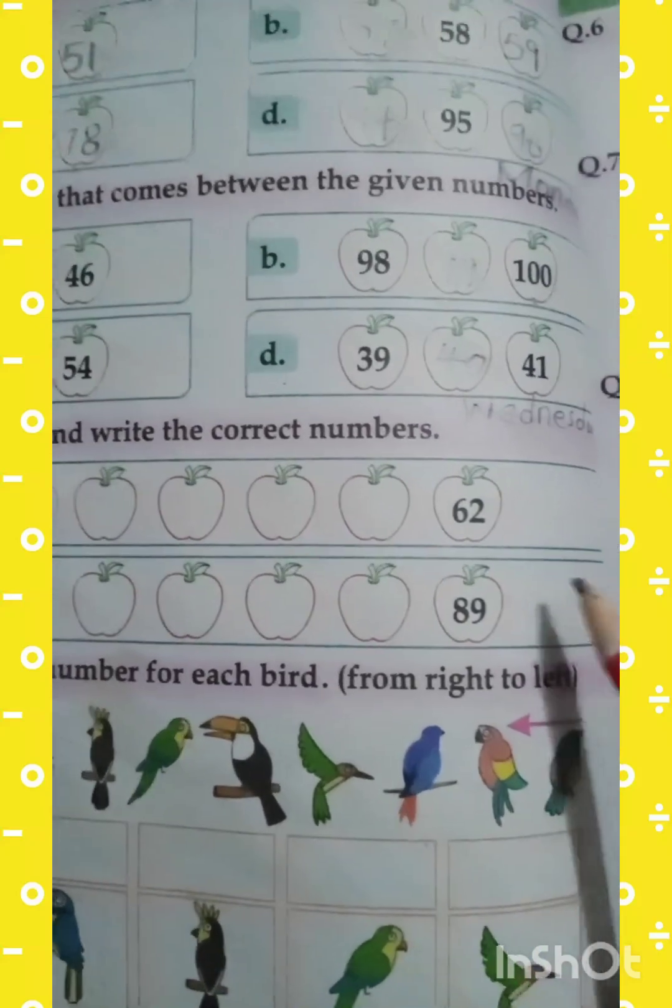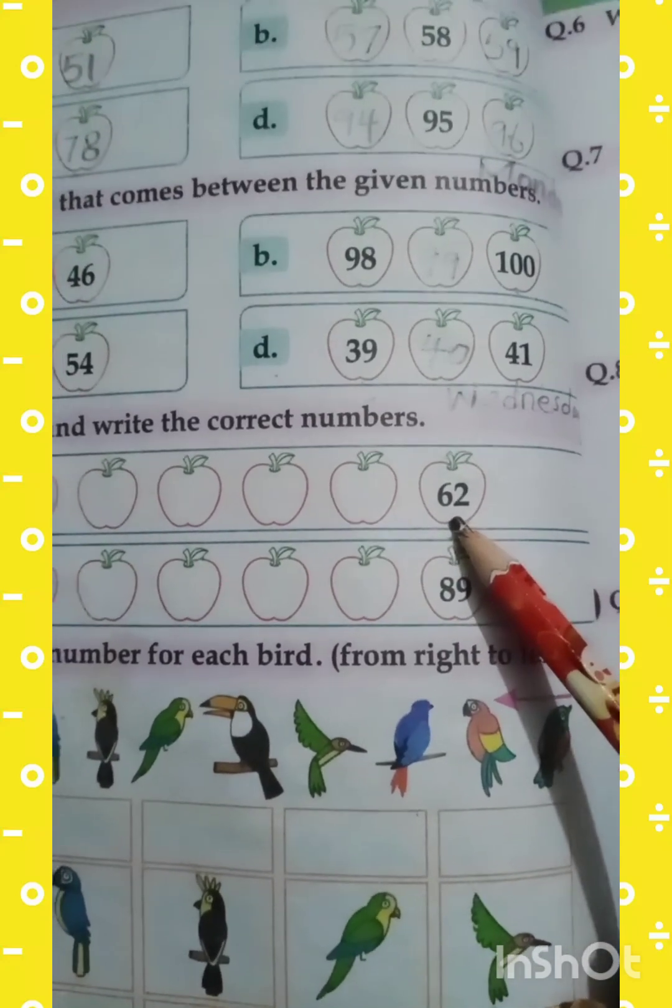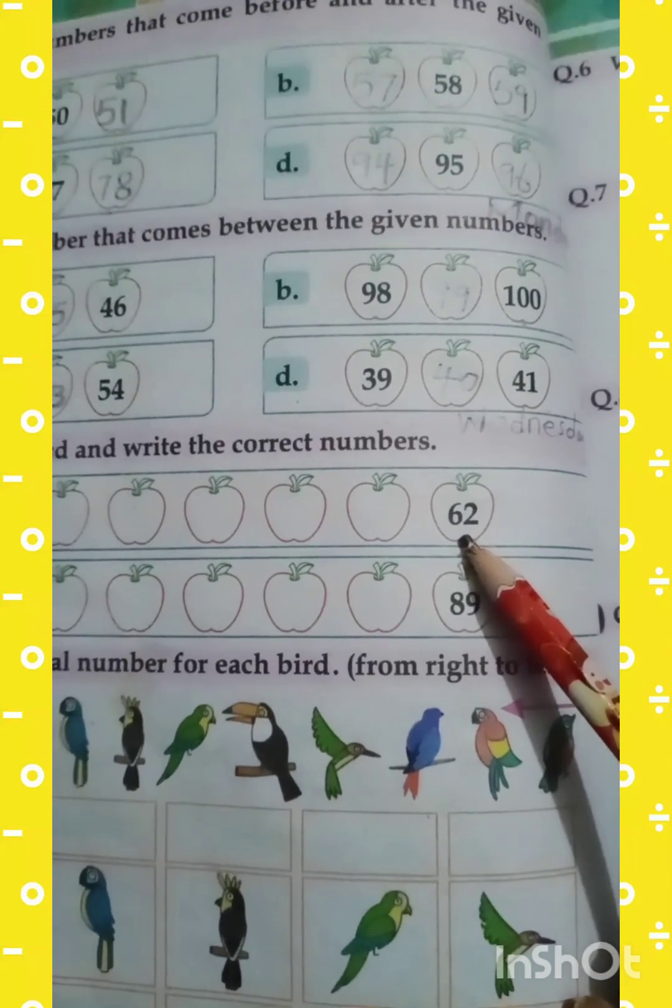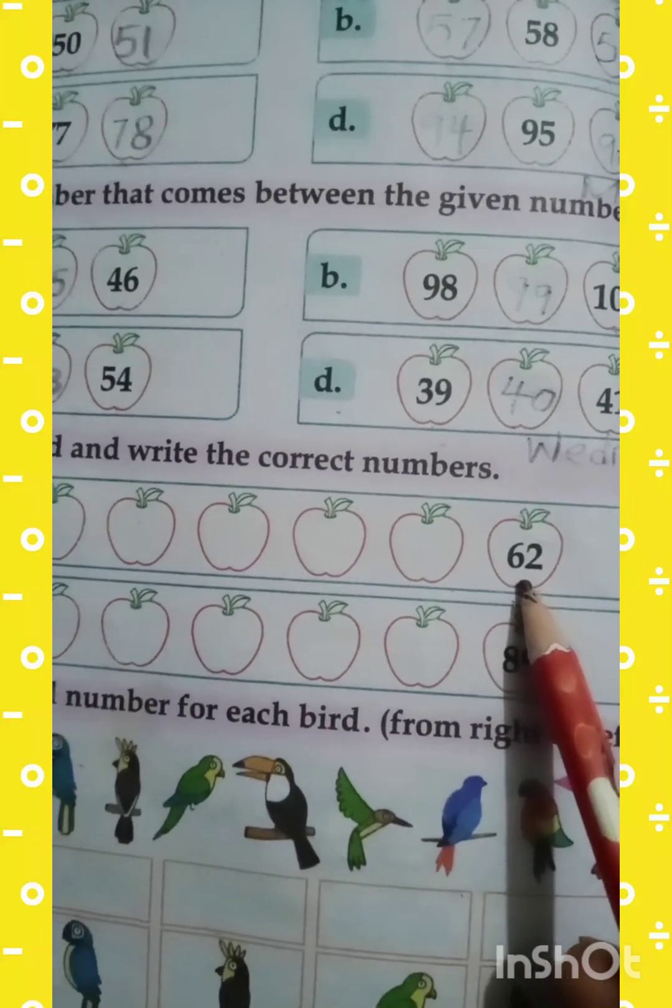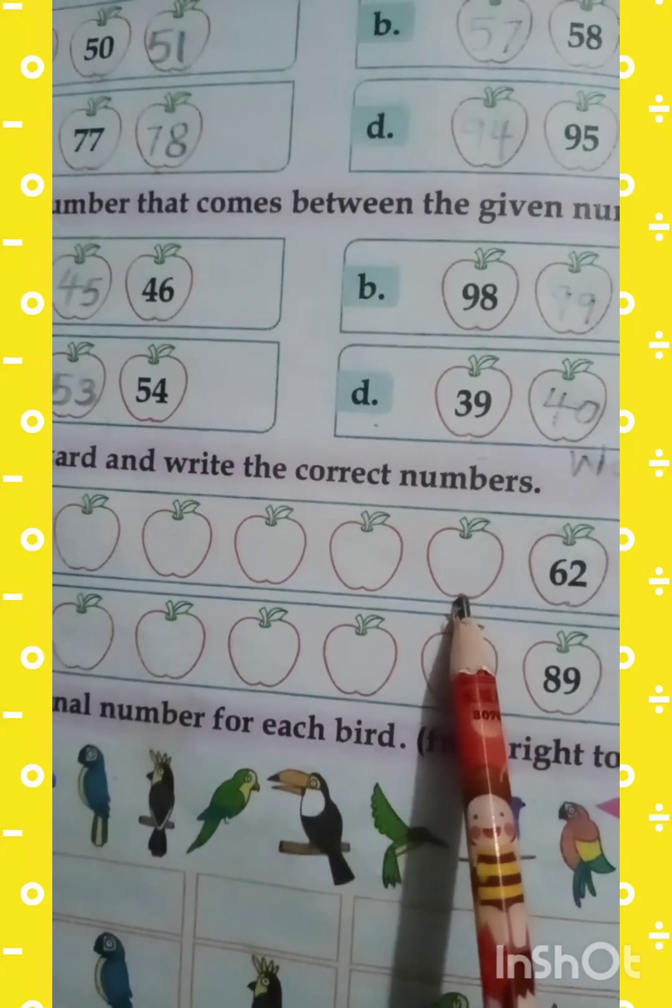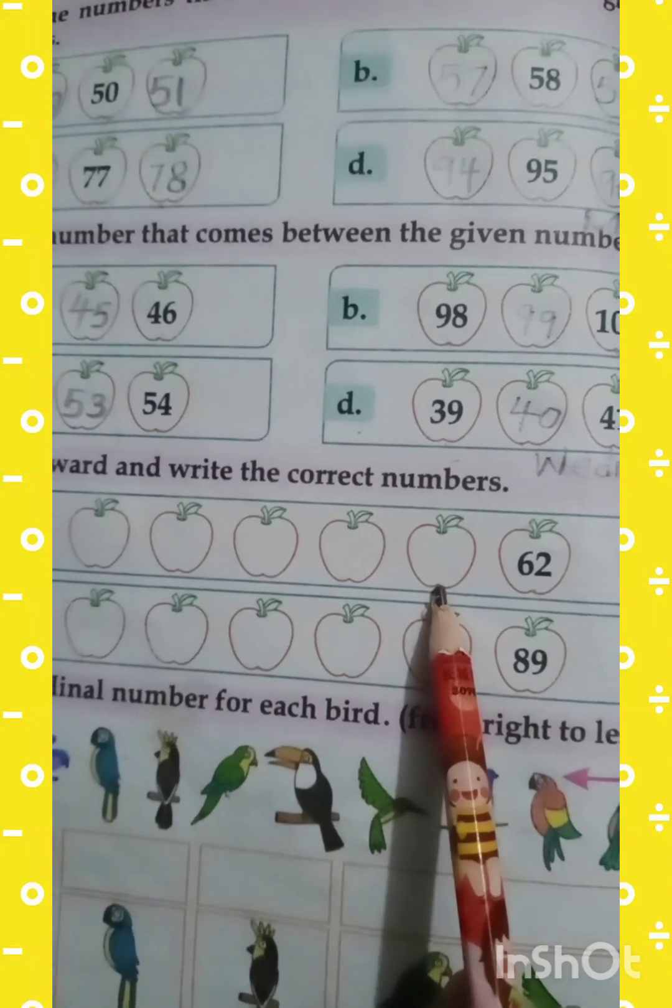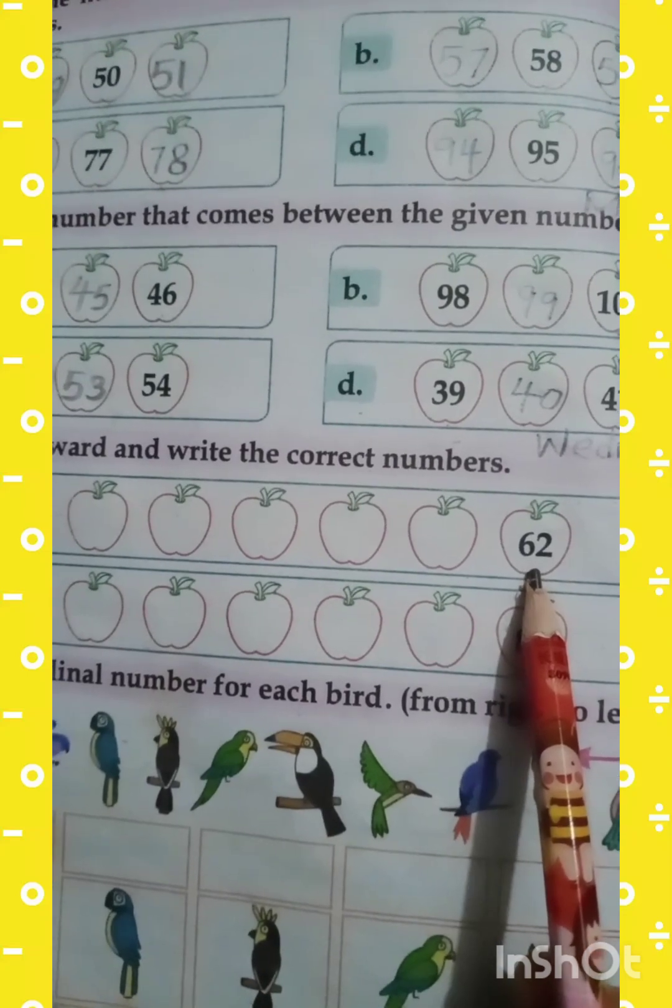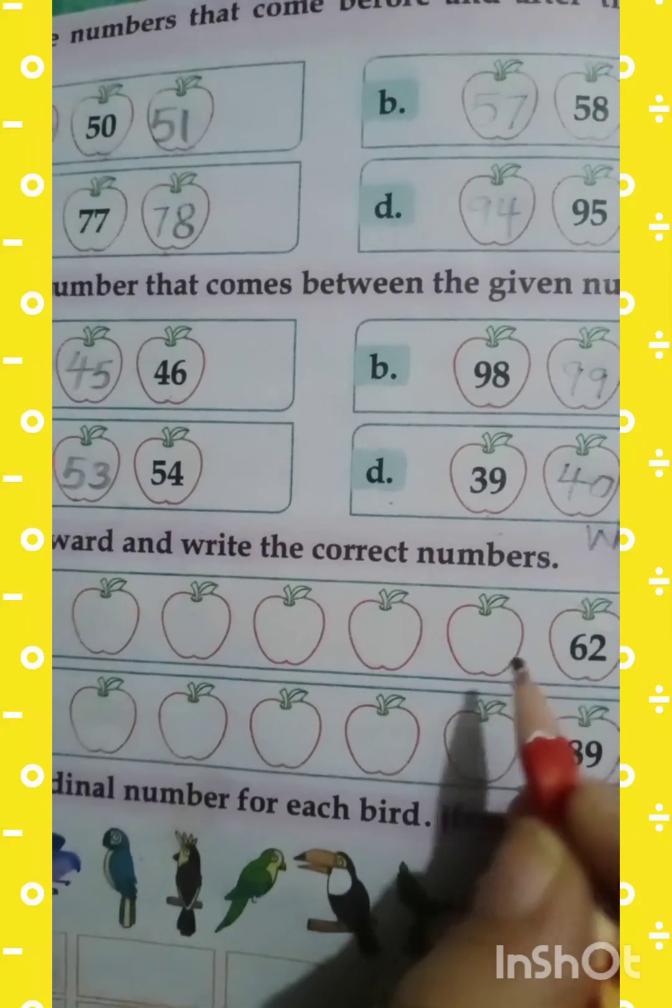We will start the work, my dear students. Here you can see the number 62 in the apple. We have to start writing backward from 62. You are not going to write the number 62 in the middle. What comes before 62? Yes, 61.